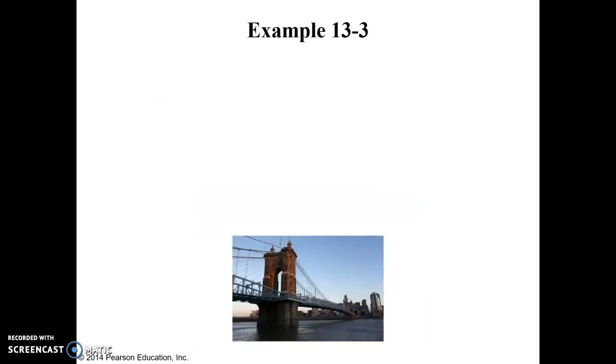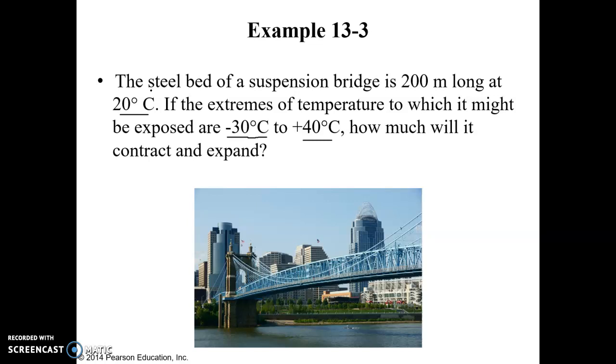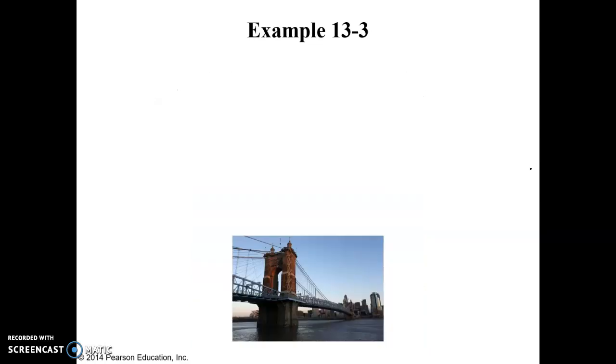We're assuming it's made of steel, or rather we know it's made of steel. That was given in the prompt statement, steel bed of the suspension bridge. And so if we look up in the table the thermal coefficient of expansion for steel, that alpha value is equal to 12 times 10 to the negative sixth. The units of this coefficient are degrees Celsius to the negative one power or inverted degrees Celsius. That's kind of a strange unit, but that's what's required to get your units to cancel out in the equation.